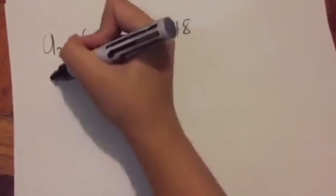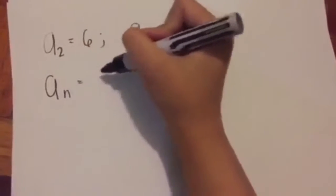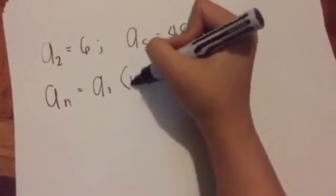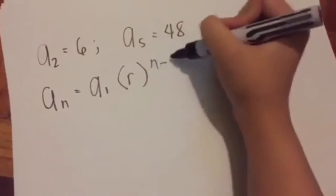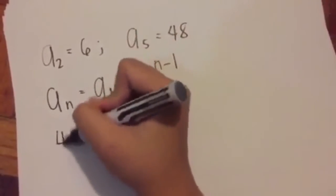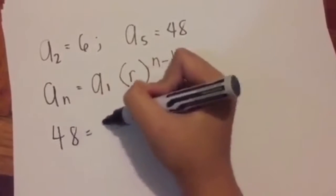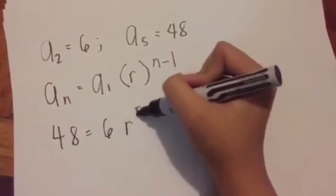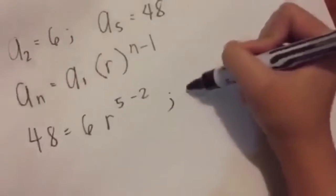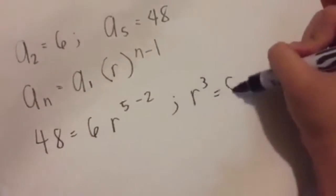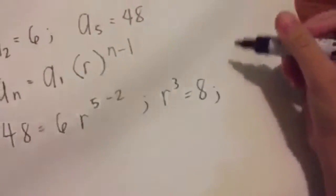Now we have another problem where a5 equals 48. You don't have an r, but don't be worried. Use the formula: an equals a1 times r raised to n minus 1.